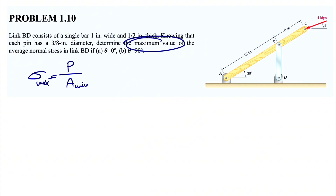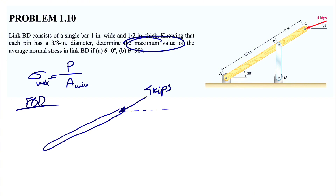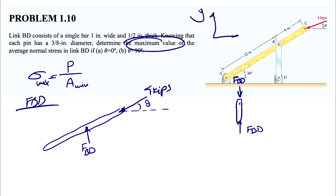We'll start with the free body diagram of bar AC. We have bar AC with a force of four kips at angle theta. At point B we have force F_BD. Looking at member BD, it is a two-force member, meaning the force will be along the line connecting B and D. Let's call it F_BD. If that's the force on bar AC, then member BD will be in compression.